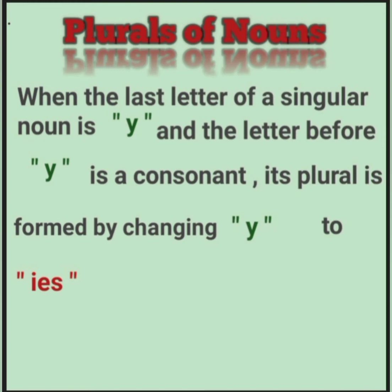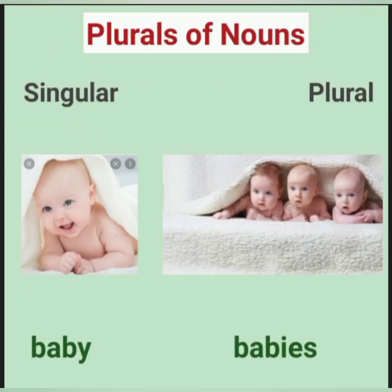When the last letter of a singular noun is Y and the letter before Y is a consonant, its plural is formed by changing Y to IES. Baby, babies.